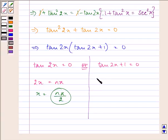For the second case, we have tan 2x = -1, where -1 can be written as tan(3π/4).